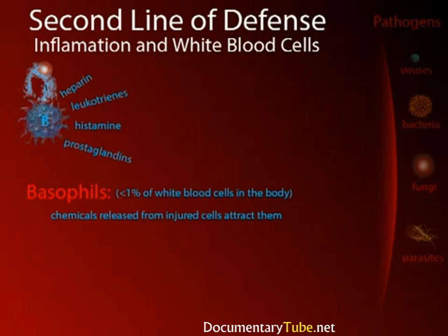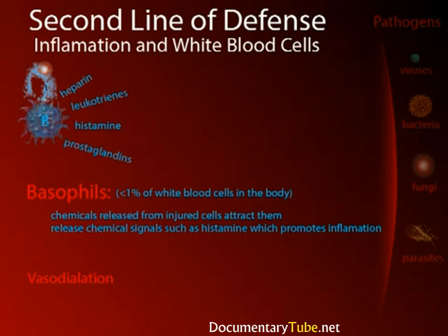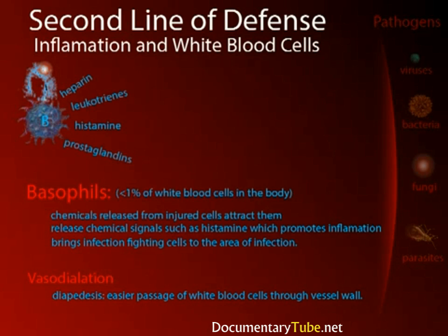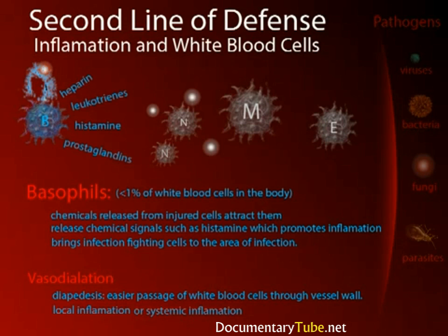Heparin inhibits blood clotting, allowing the wound to wash out any foreign matter introduced during the injury. Histamine triggers inflammation, or vasodilation — when the vessels dilate, making them larger. This brings additional blood flow to the area so that the area has additional resources for fighting infection. The dilation also makes it easier for white blood cells to squeeze between the vessel's cells and enter into the tissue that's damaged and infected — this process is called diapedesis. If the infection stays contained to one location, it's called a local inflammation; but if it escapes into the bloodstream, it triggers a systemic inflammation. There are many types of white blood cells that become active in fighting an infection; the basophil is merely the first type.